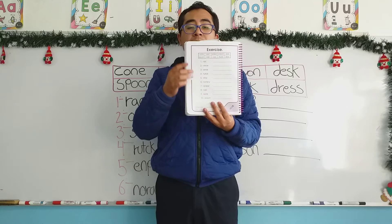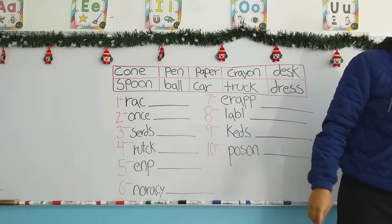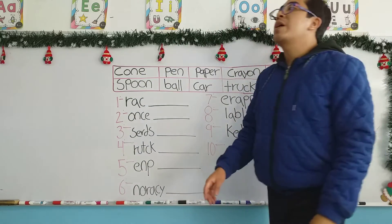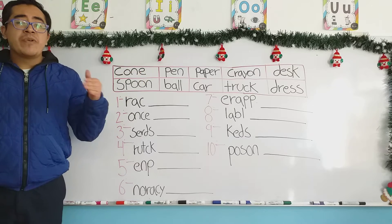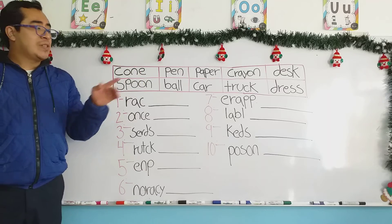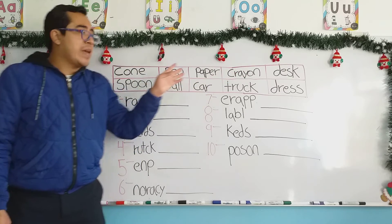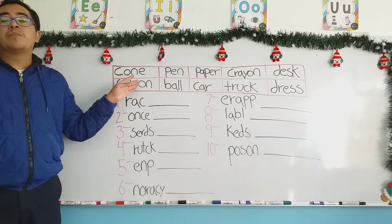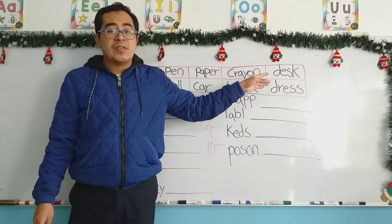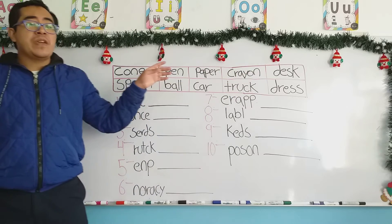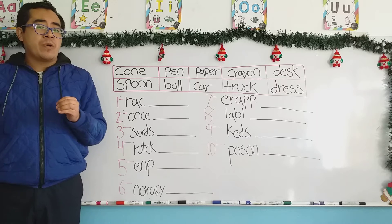For this activity, my children, on the top of the page, we have the words in order. We have words like comb, pen, paper, crayon, desk, spoon, ball, car, truck, and dress. All of these words that appear inside the rectangles are in order.